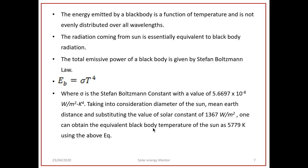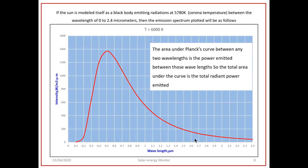The total emissive power of a black body is given by the Stefan-Boltzmann law: Eb = σT⁴, where σ is the Stefan-Boltzmann constant equal to 5.67 × 10⁻⁸ W/m²K⁴. Taking into consideration the diameter of the Sun, mean Earth-Sun distance, and substituting the solar constant of 1367 W/m², one can obtain the equivalent black body temperature of the Sun, which comes out to be 5779 Kelvin. Conversely, if the Sun is modeled as a black body emitting radiation at 5780 Kelvin — which matches the corona temperature — this is consistent.